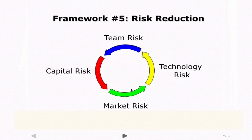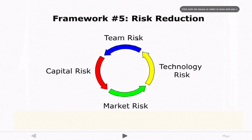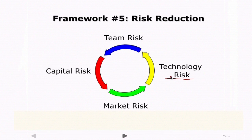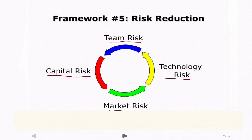Framework number five is that entrepreneurship is essentially about risk reduction at each and every step. You start a new venture and it's going to be risky in several different ways. There's technology risk — is the technology going to work, can we develop it, does it solve the problem? There's team risk — can we put together and recruit the right people? There's capital risk — can we raise the capital we need to create the venture? And finally, there's market risk — is there really a market for this product, do customers really want to buy it, do they really have the unfulfilled need we say they do?